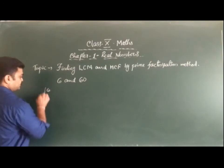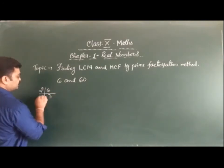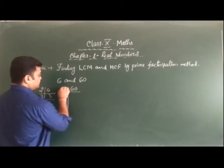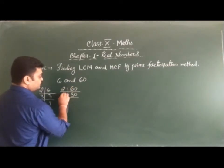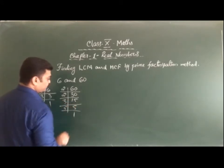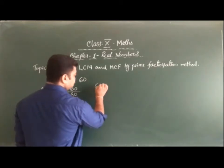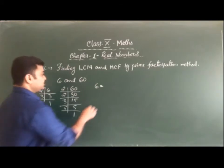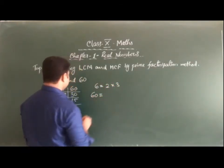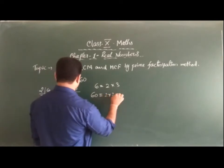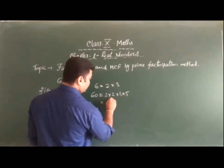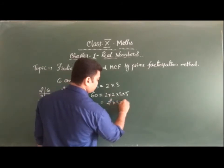For 6: 6 ÷ 2 = 3, 3 ÷ 3 = 1. So 6 = 2 × 3. For 16: 16 ÷ 2 = 8, 8 ÷ 2 = 4, 4 ÷ 2 = 2, 2 ÷ 2 = 1. So 16 = 2 × 2 × 2 × 2, which is 2⁴. Wait — that means 6 = 2 × 3 and 16 can be expressed as 2 × 2 × 3 × 5, written as 2² × 3 × 5.